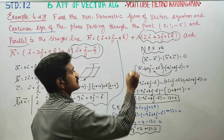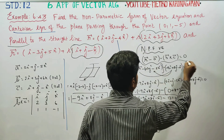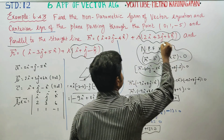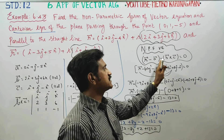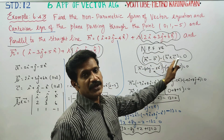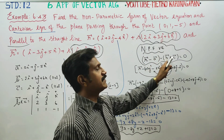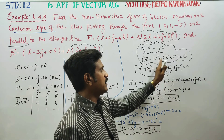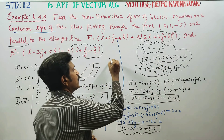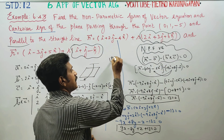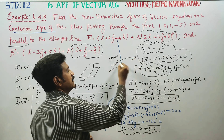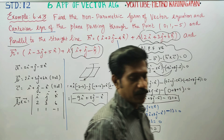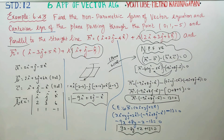This formula is the main formula for solving this problem. The non-parametric form of the vector equation is r minus a, dot b cross c, equals 0, requiring 1 point and 2 parallel vectors.